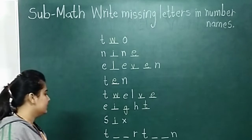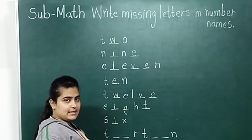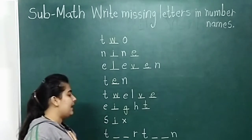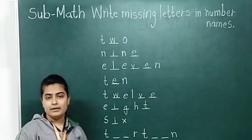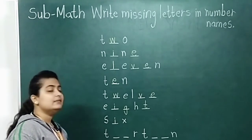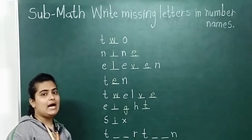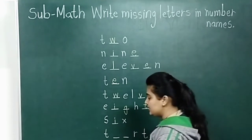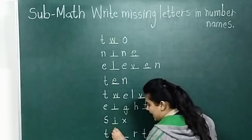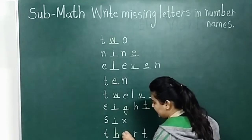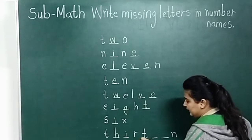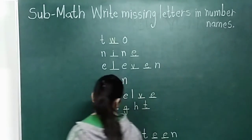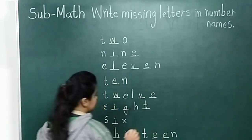Now next number name. T, dash, dash, R, T, dash, dash, N. Which number name is this? Thirteen. T, H, I, R, T, double E, N — thirteen. The missing letters are H, I and double E. T, H, I, R, T, double E, N — thirteen.